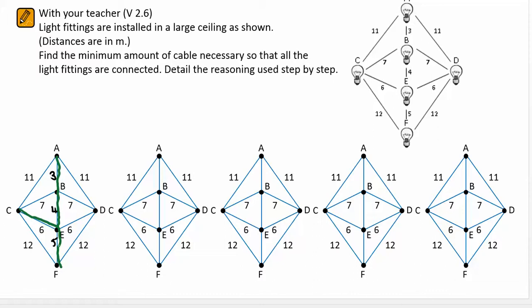It then remains for me to grow outwards — six lengths there to do. So if I add those up, I've got a total length of 3, 4, 6, 6, and 5, and that will give me a total of 24 metres.